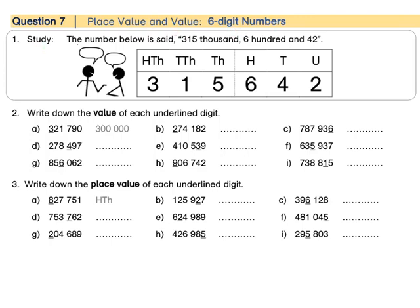Let's study. The number below is said 315,000. Do you notice everything before the thousands column is said as we'd usually do? So we say 315,000 and then 642.